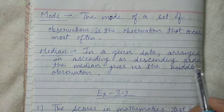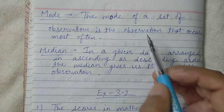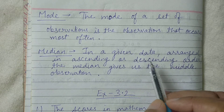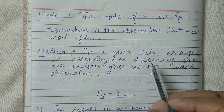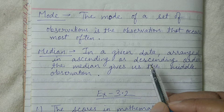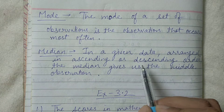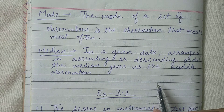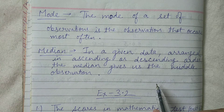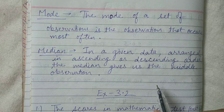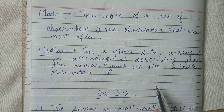Now there are two more terms: mode and median. The mode of a set of observations is the observation that occurs most often — the number that appears maximum number of times. For finding the median, first arrange the data in ascending or descending order. The median gives us the middle observation. Both ascending and descending order are correct — then check which value is the middle one, and that middle value is the median.